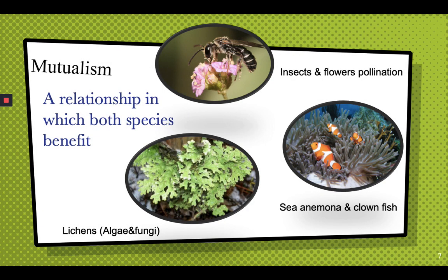Mutualism is a relationship in which both species actually benefit. For example, insects and flowers — insects help the flowers to pollinate, and the nectar of the flower helps feed the insect.